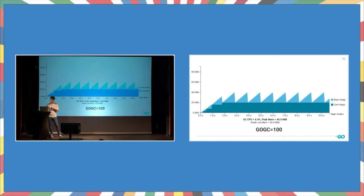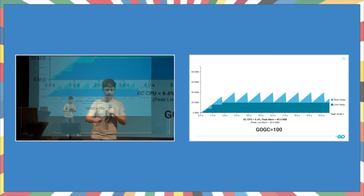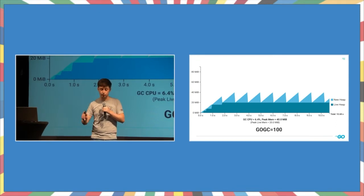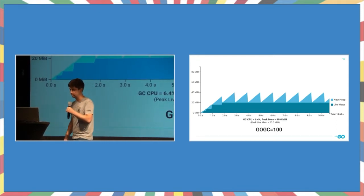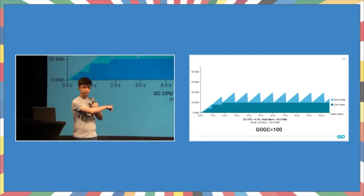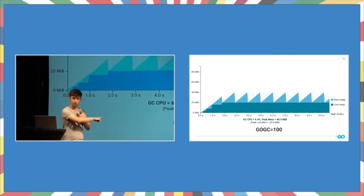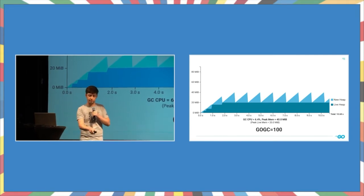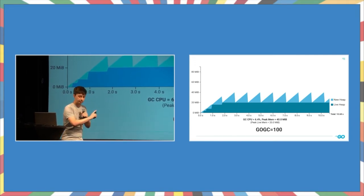So back to our original picture, notice that the live heap is at 20 megabytes and the peak memory use around the 2 second mark is 40 megabytes. So this squares with our GoGC value. So I want you to take note of the GC CPU percent here, this overhead that we've simulated for our little application. Take note of that 6% number because we're gonna try a few other GoGC values and see what happens.